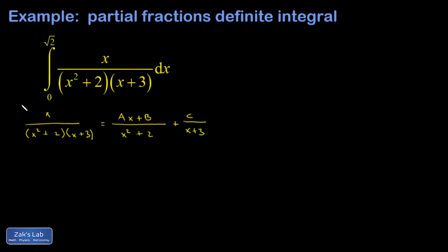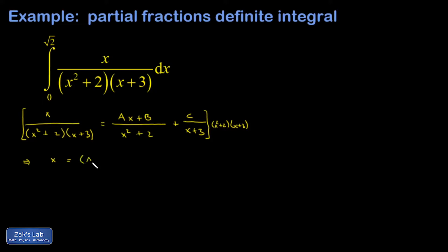As usual, we multiply both sides by the least common denominator, which is (x² + 2)(x + 3). Everything cancels out in the denominators. On the left-hand side I'm left with just x. On the right-hand side, the (x² + 2) cancels out of the first term, leaving me with (Ax + B), and the (x + 3) cancels out of the second term, leaving me with C(x² + 2).